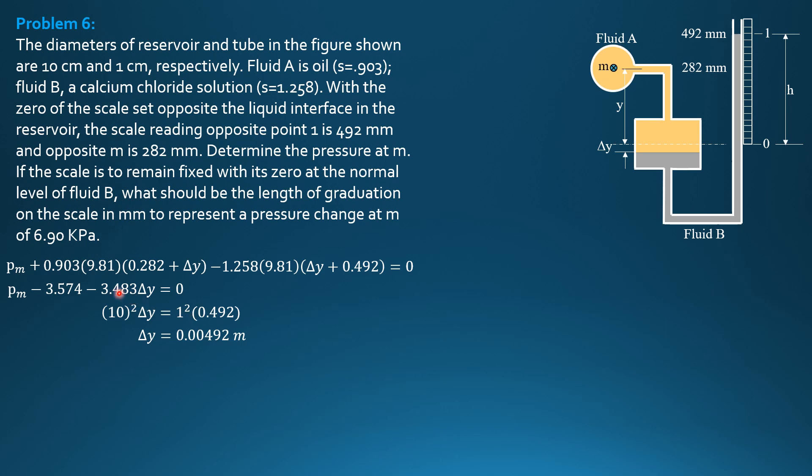Substitute in this equation here for delta Y, and we can now solve for P sub M. P sub M minus 3.574 minus 3.483 times 0.00492 equals 0. So P sub M is 3.574 plus 3.483 times 0.00492. The pressure at M is 3.591 kilopascals.